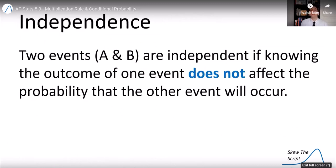Independence. So let's talk about this rule of independence. Two events, A and B, are independent if knowing the outcome of one event does not affect the probability the other event will occur. So the probability of A given B, in other words, is the same thing as the probability of A. Knowing that B occurred or didn't doesn't affect at all the probability of A occurring.